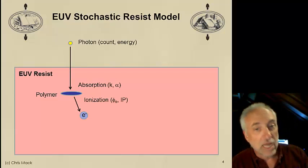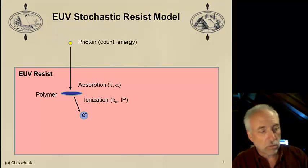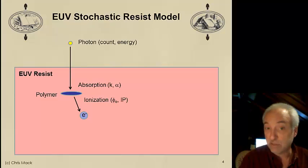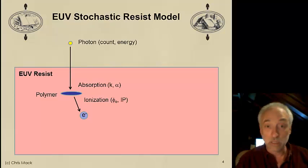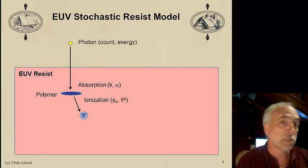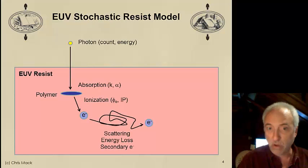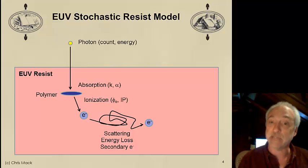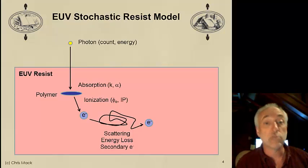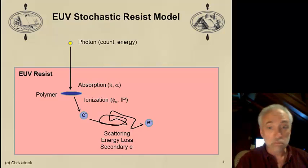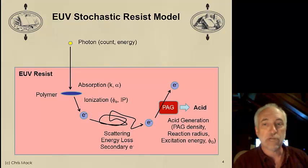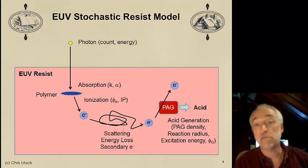With an ionization potential of about 10 eV, the EUV photon kicks off an electron with roughly 92 minus 10 = 82 electron volts of energy remaining — a fairly high-energy electron. That photoelectron bounces around inside the photoresist, just like in e-beam lithography, scattering and losing energy, potentially producing secondary electrons. In fact, we can get a cascade of secondary electrons — typically three or four per photon. These electrons then interact with a PAG, transferring energy to the photoacid generator, which generates an acid. Every one of these events is a stochastic event.